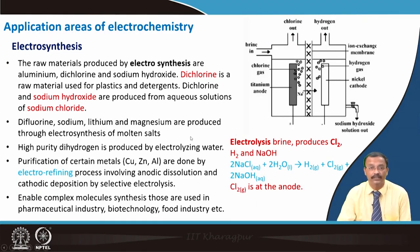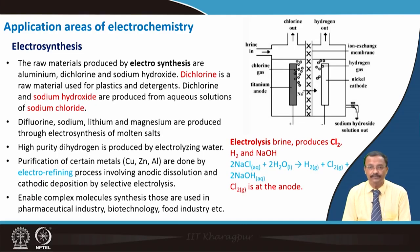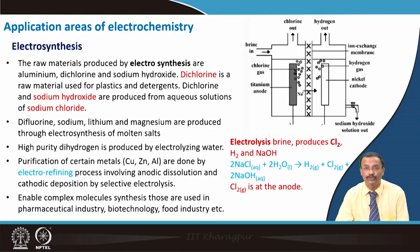The first application area is electrosynthesis, which is probably known to all of you. Various raw materials are produced by electrosynthesis — examples include aluminium, dichlorine, and sodium hydroxide. Dichlorine is a raw material used for plastics and detergents. Dichlorine and sodium hydroxide are produced from aqueous brine solution, that is sodium chloride solution.